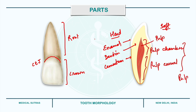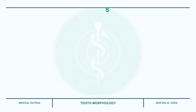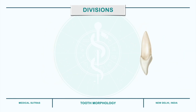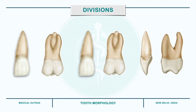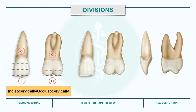Coming to the divisions of teeth: the crowns and roots of teeth are divided into three equal parts for the purpose of description and communication. These divisions are named according to their location. The crown can be divided into thirds in three directions: incisocervically, mesiodistally, and labiolingually or buccolingually.